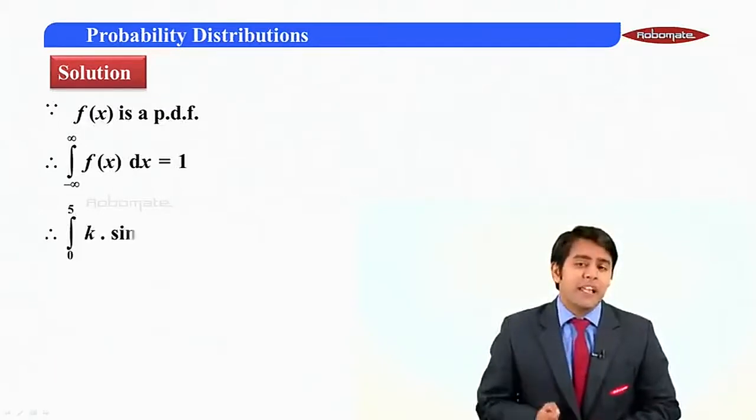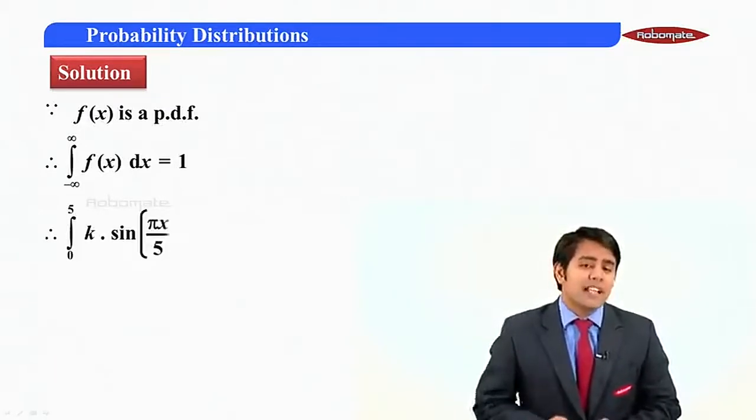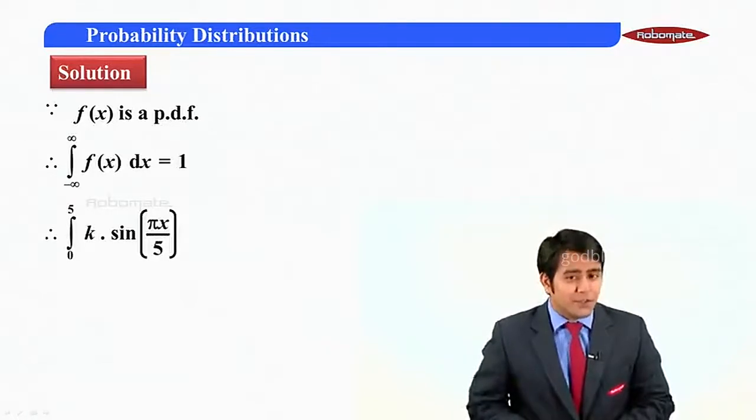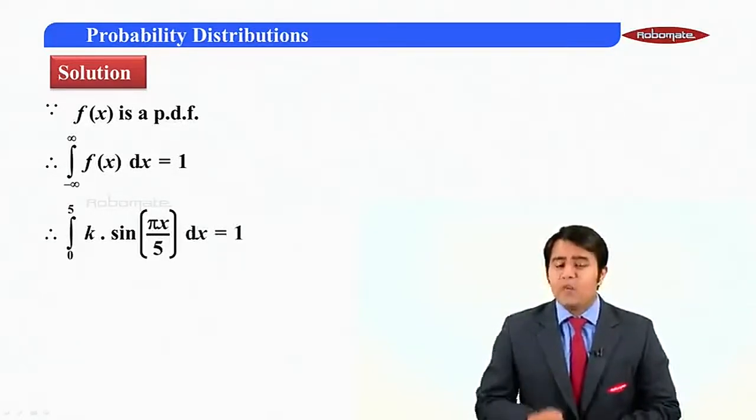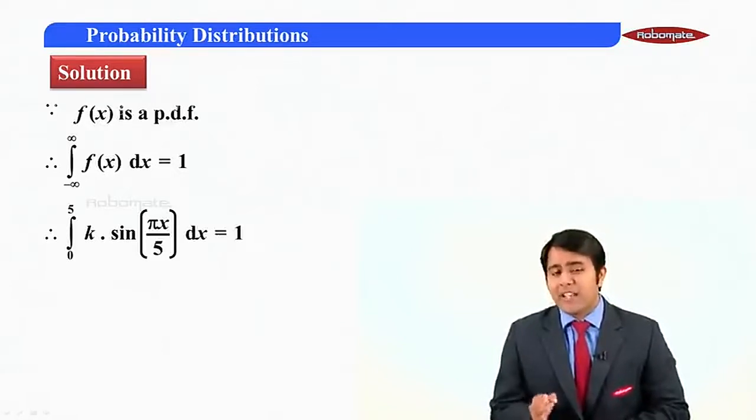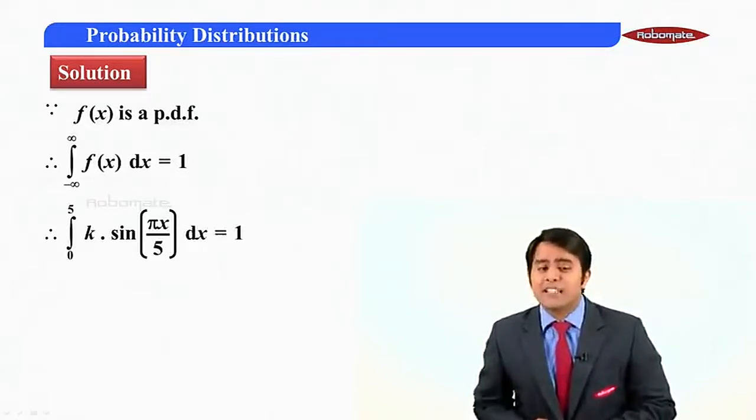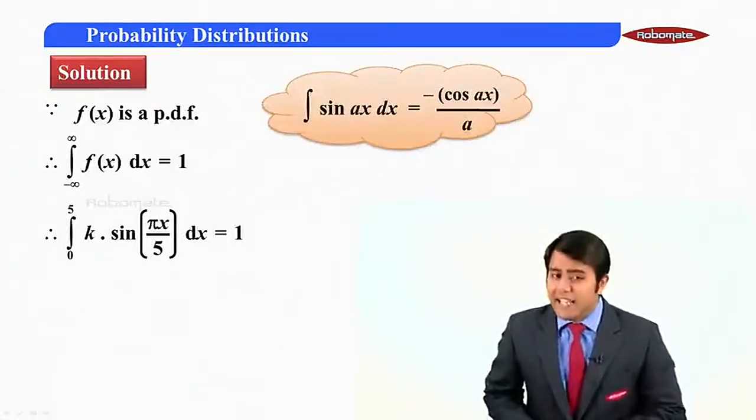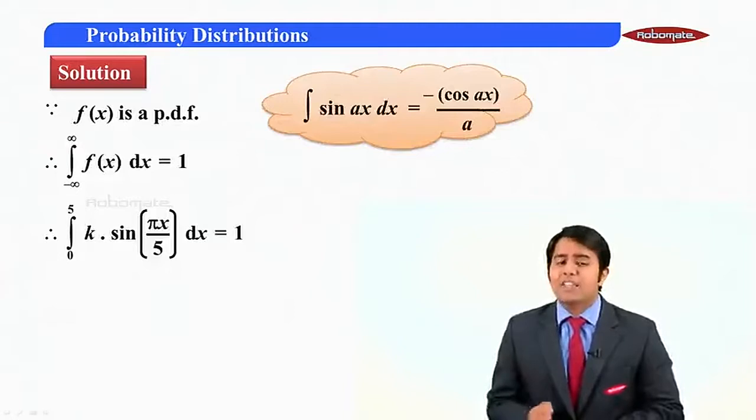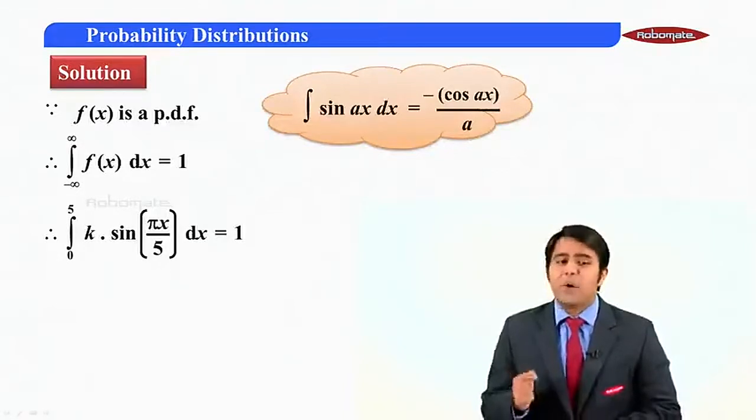So integral 0 to phi, f of x is given to us as k sin pi x upon phi dx. This value is equal to 1. Now we know that k is constant and we can take constant outside the integral symbol.